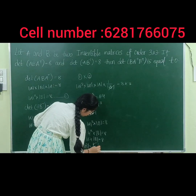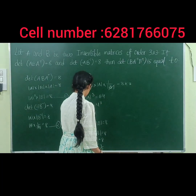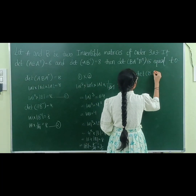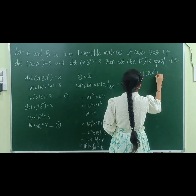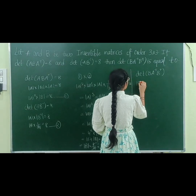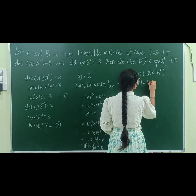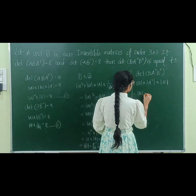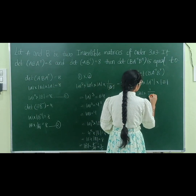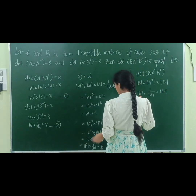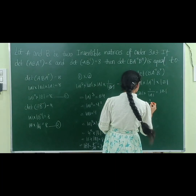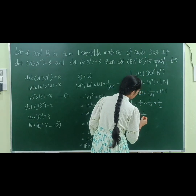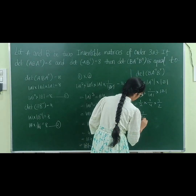So |A| = 4 and |B| = 1/2. Now computing |B · A⁻¹ · Bᵀ|: |B| · (1/|A|) · |B| = (1/2) · (1/4) · (1/2) = 1/16. The answer is 1/16.